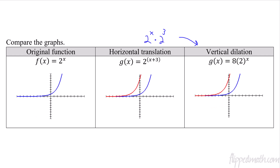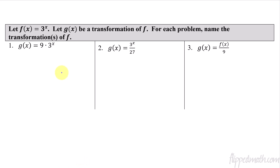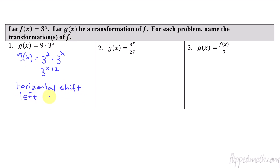So how do we use this in problems? Typically they go the other way around — they'll give you a function and ask what transformation occurred relative to the original f(x) = 3 to the x. You rewrite g(x) by changing to the same base: 9 is the same as 3 squared, so 9 times 3 to the x becomes 3 squared times 3 to the x. By the product property, that's 3 to the x plus 2 — so this is a horizontal shift left two units.